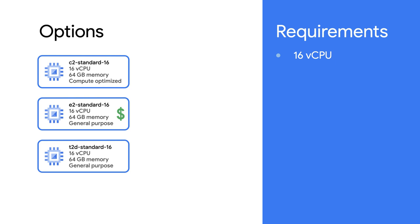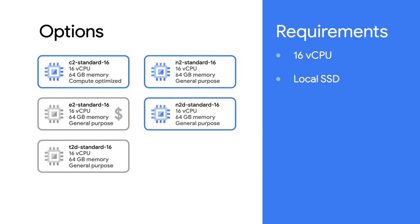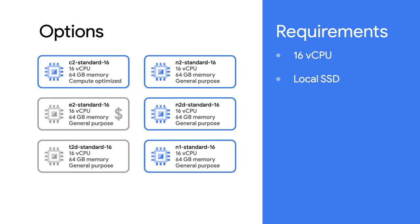Now, if performance requires block storage, local SSDs are an excellent solution. According to the documentation, we can't attach a local SSD to an E2 or T2D machine, but we can attach one to a C2. For a general purpose option, N2 Standard 16, N2D Standard 16, and N1 Standard 16 are all compatible with local SSD. If testing shows our application runs well with less memory, we can choose a high CPU machine type — N2 High CPU 16, N2D High CPU 16, or N1 High CPU 16 — all with only 16 gigabytes of memory, removing the need for C2.